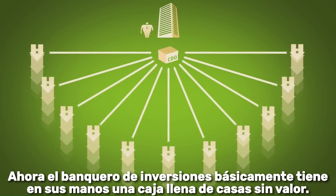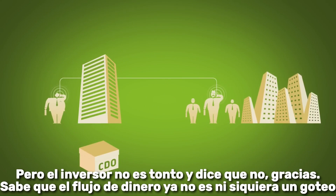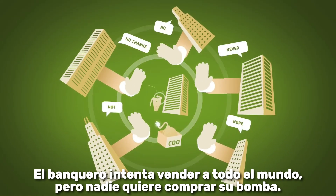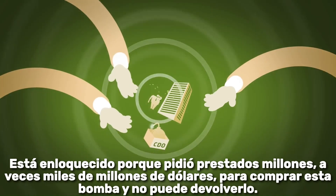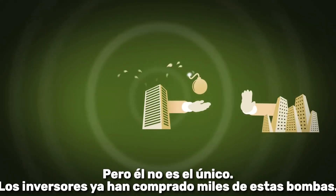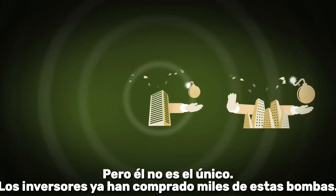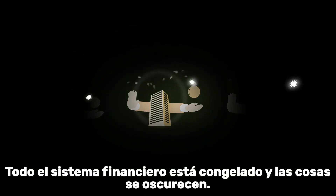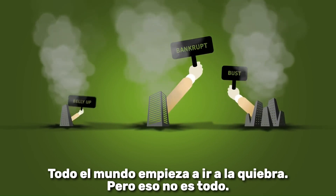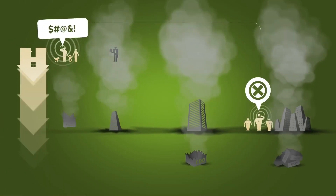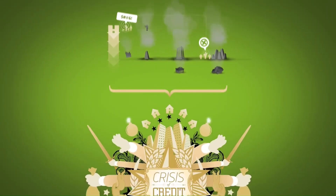Now the investment banker is holding a box full of worthless houses. He calls up the investor to sell his CDO, but the investor isn't stupid and says no thanks — he knows the stream of money isn't even a dribble anymore. The banker tries to sell to everyone, but nobody wants to buy his bomb. He's freaking out because he borrowed millions, sometimes billions of dollars to buy this bomb, and he can't pay it back. He's not the only one — investors have already bought thousands of these bombs. The lender calls trying to sell his mortgage, but the banker won't buy it, and the broker is out of work. The whole financial system is frozen and things get dark. Everybody starts going bankrupt. The investor calls the homeowner and tells him his investments are worthless. You can begin to see how the crisis flows in a cycle. Welcome to the crisis of credit.